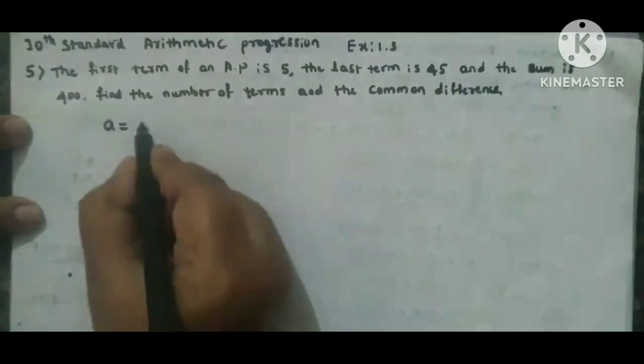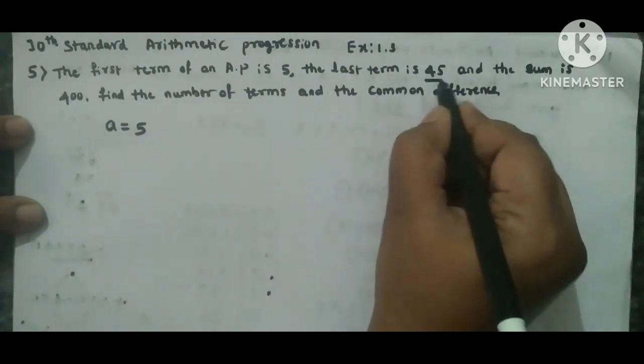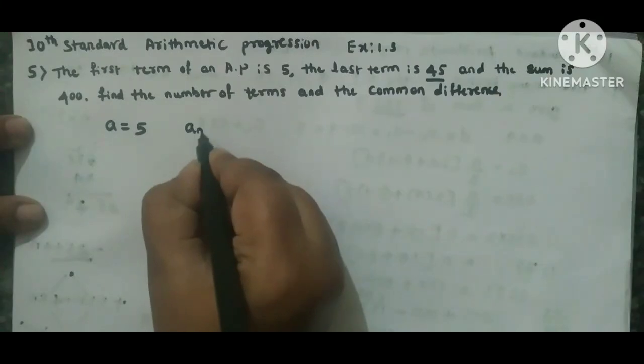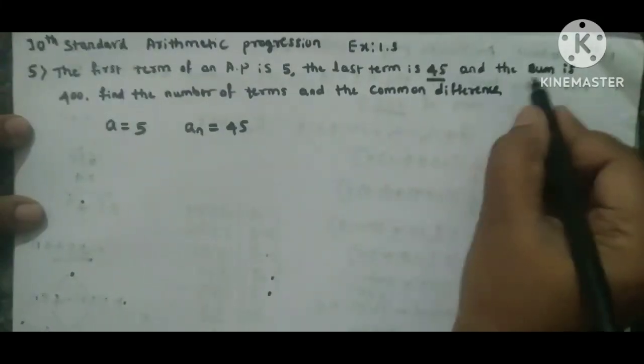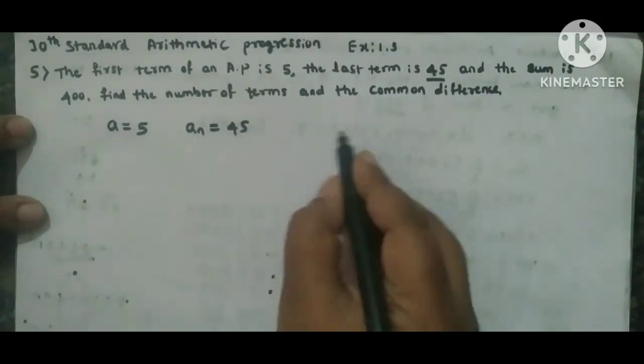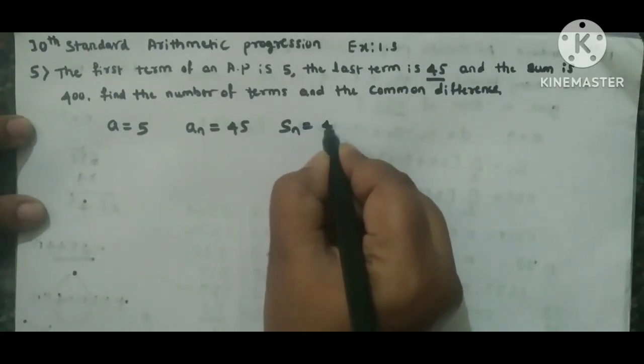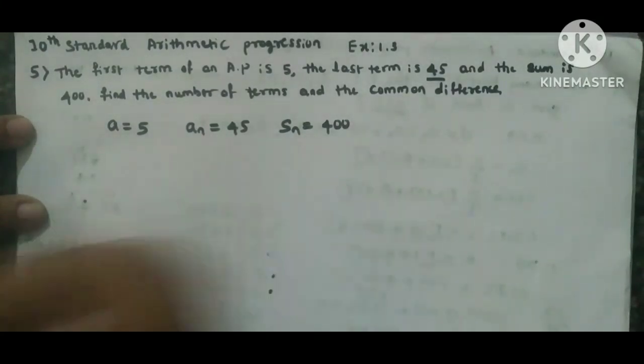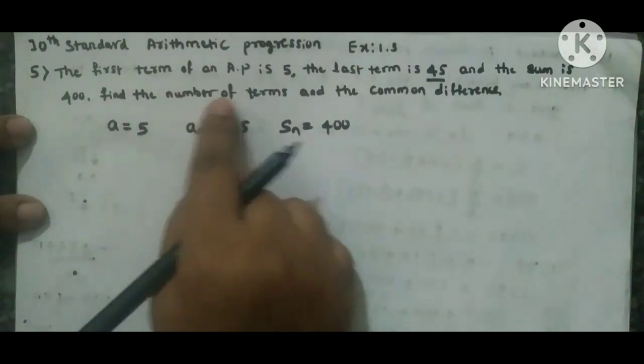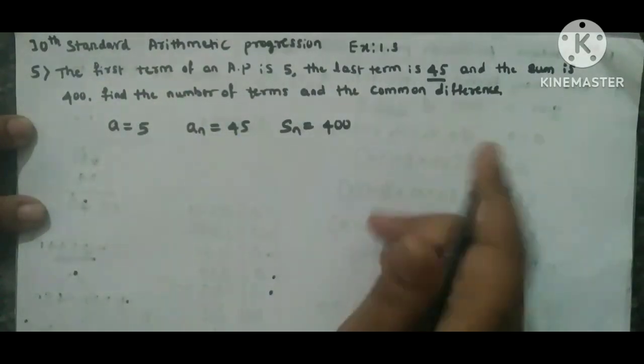means first term is 5, and last term an is 45. And the sum, sum means how we represent the sum, Sn. So Sn is 400. Using these three things we have to find the number of terms and the common difference, means we need to find n, number of terms, and the common difference d.